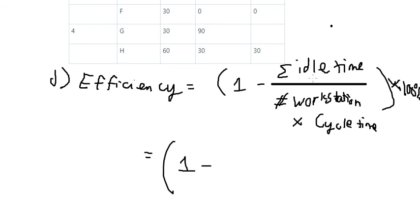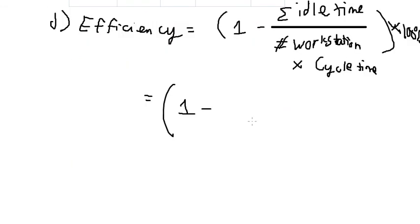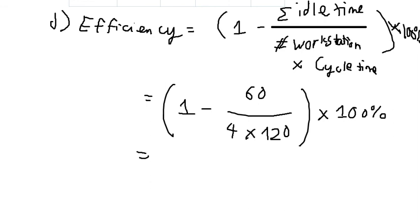So the total idle time, we have 10, 20, 30. We sum all the numbers in here and we got about 60 over 4 workstations. We multiply by 120, we multiply by 100%, and we have 87.5%. And this is the final answer.